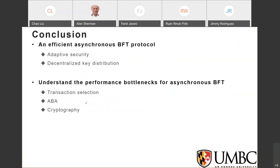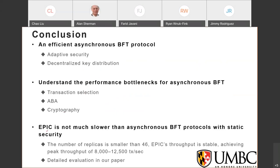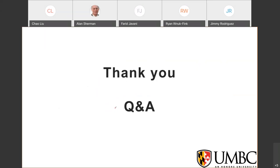In conclusion, EPIC is an efficient asynchronous BFT protocol that achieves adaptive security. Because the threshold signature used is also adaptively secure, we use decentralized key distribution for the threshold signature. We mix and match these building blocks — ABA, cryptography, and transaction selection — to understand the asynchronous BFT design space. EPIC performs not much lower than asynchronous BFT protocols with only static security.